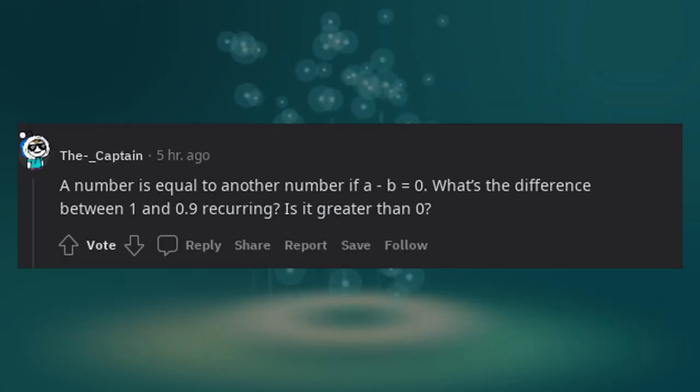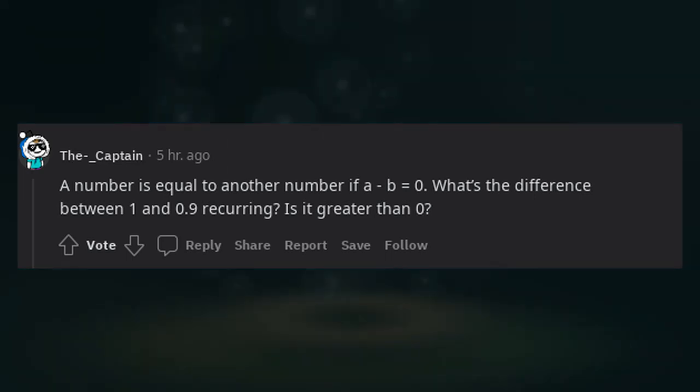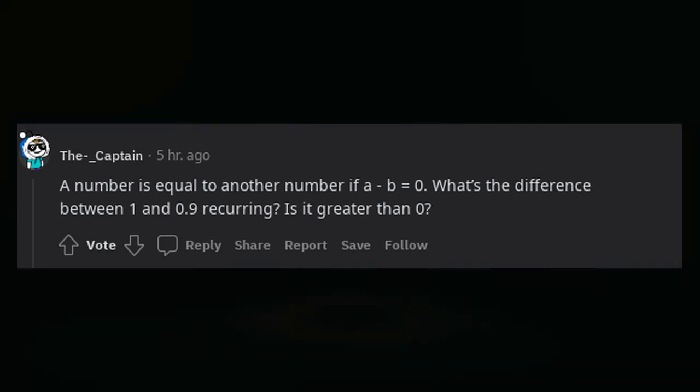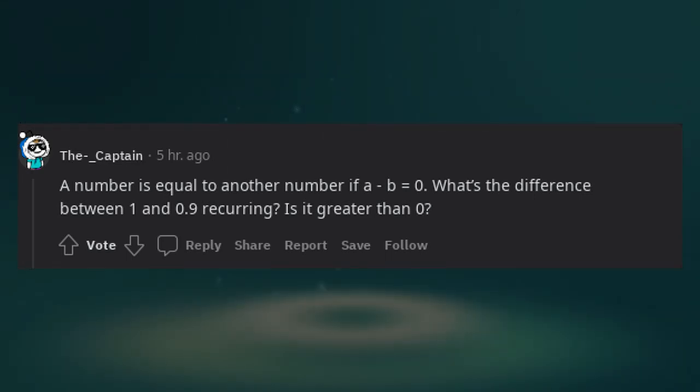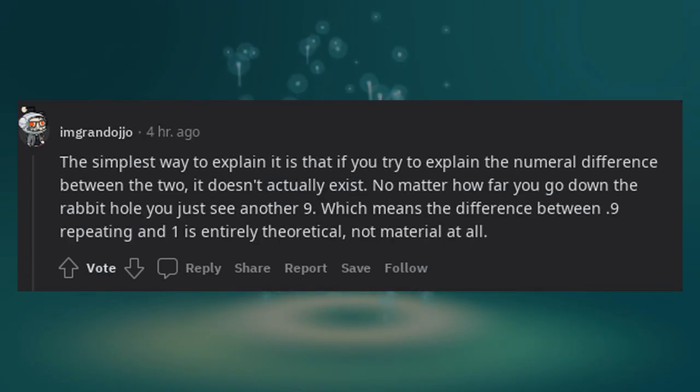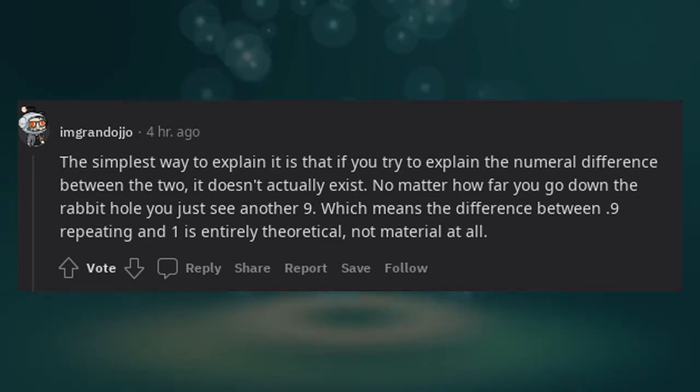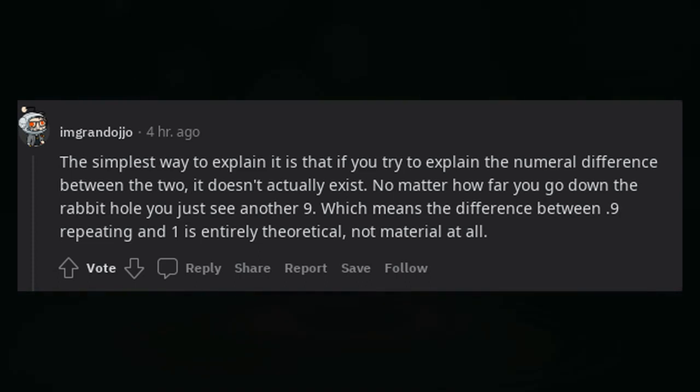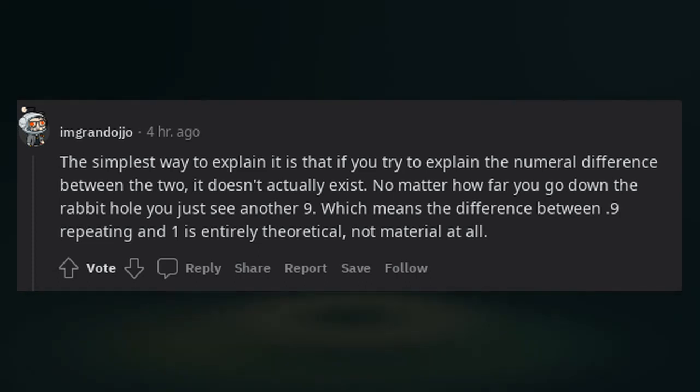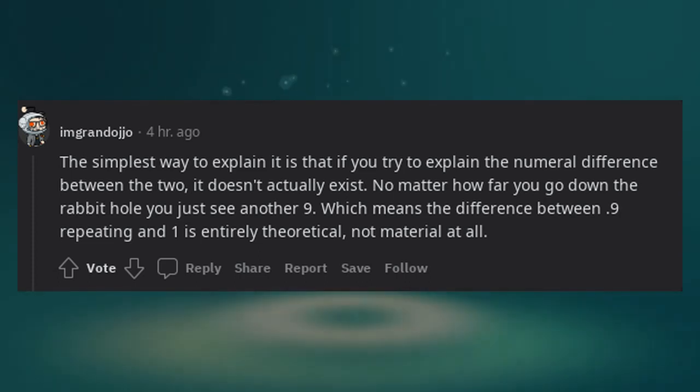A number is equal to another number if a minus b equals 0. What's the difference between 1 and 0.9 recurring? Is it greater than 0? The simplest way to explain it is that if you try to explain the numeral difference between the two, it doesn't actually exist no matter how far you go down the rabbit hole—you just see another 9. Which means the difference between 0.9 repeating and 1 is entirely theoretical, not material at all.